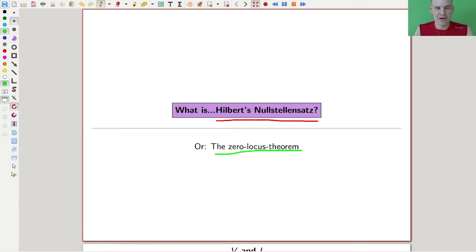I don't know an English translation except the zero locus theorem. So if you know anything about Hilbert's Nullstellensatz in various languages, let me know. It would be lovely to actually know that.